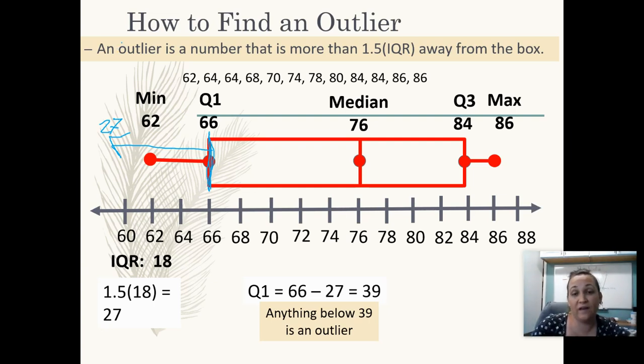Now we also need to check for high outliers. So for the higher outliers, we would start at our quartile three, which is 84. We would go 27 numbers to the right, and if there are still numbers from our data set, then we say that that is an outlier.